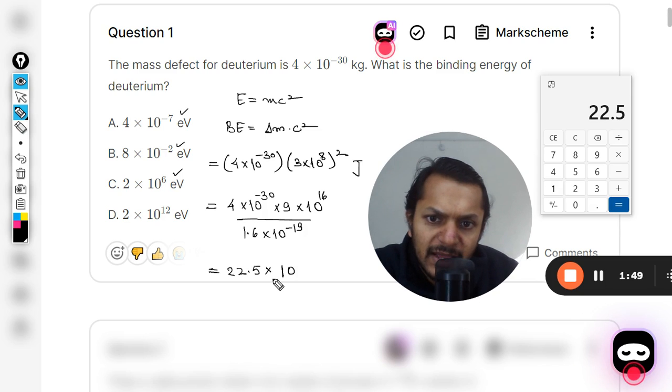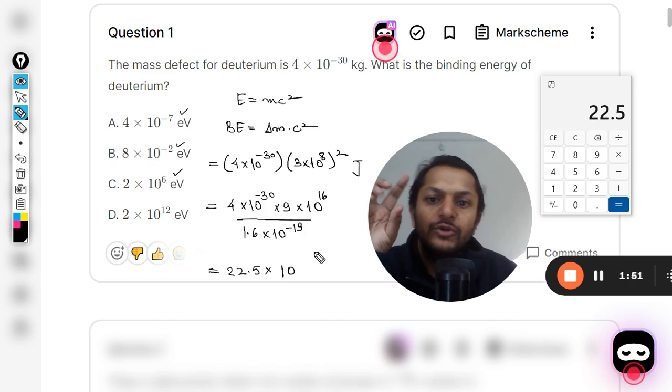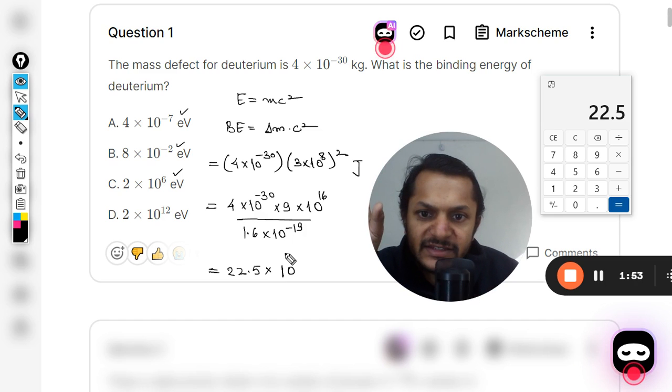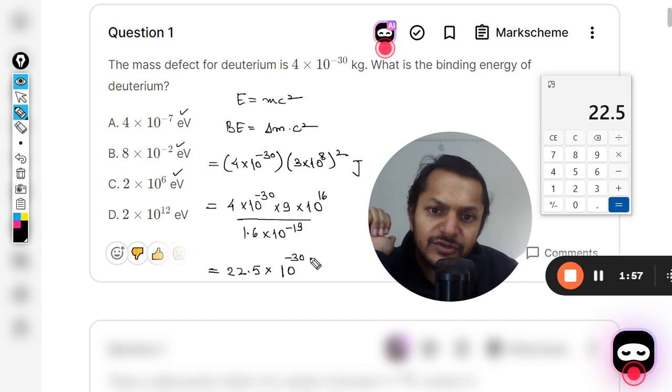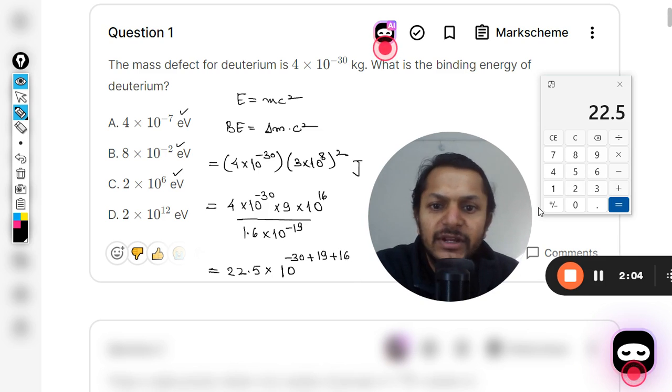Multiply by 10. Now how to compute this exponent of 10? See, this is -30. You just write it here like that. 19 is in the denominator negative, so that will become positive 19. 16 will be added here like this.